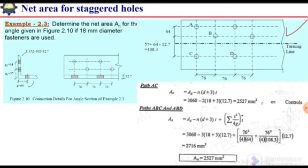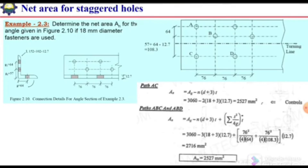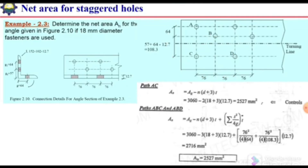This unfolded figure is now identical to a simple flat plate, making net area calculation straightforward. We consider different possible failure planes: path AC, path ABD, and path ABC. Paths ABC and ABD have the same pitch, same stagger, and same gauge length, so they are identical and we only need to investigate one of them.